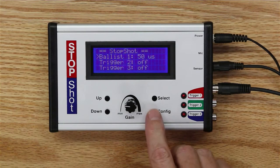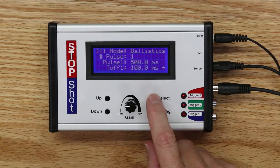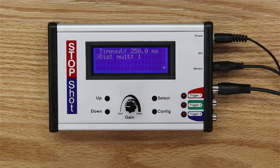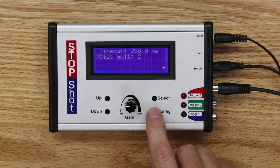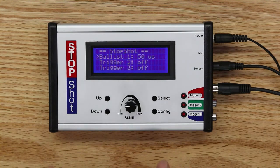We do that by hitting the config button on the ballistics output channel, which happens to be number one, and then we scroll through the screen, the number of pulses. We come to the distance multiplier, we increment that by clicking the up button once, come back to the configuration menu.